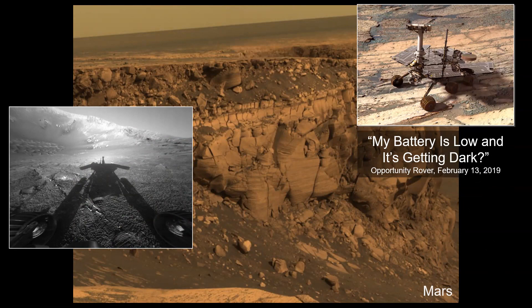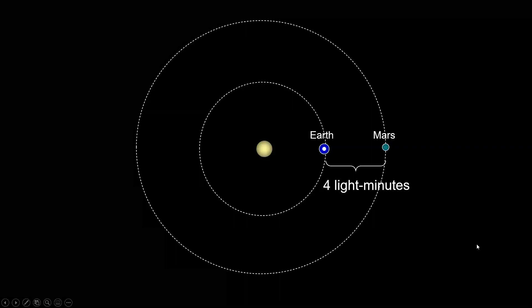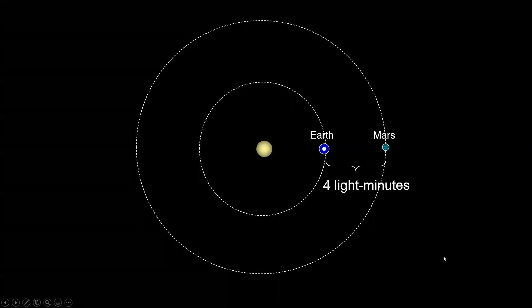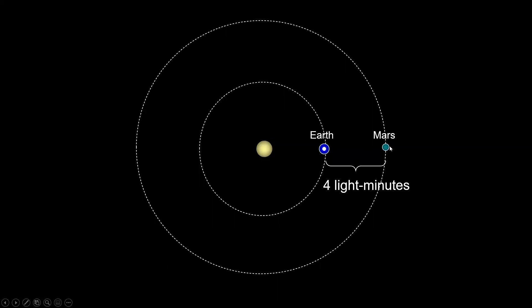There are more rovers on the surface of Mars. So it's one of those things that space scientists and astronomers need to think about — when Earth is here and Mars is here, it takes radio signals four minutes to get there. So if we have a person on Mars communicating with a person on Earth, and the person on Earth says 'hello,' it takes four minutes for them to hear hello.